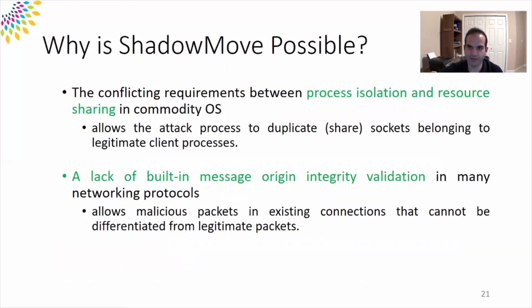Now let's talk briefly about why ShadowMove is possible. The first problem is a conflict between process isolation and resource sharing requirements on commodity operating systems. On one hand, the OS is required to provide resource sharing; on the other hand, it must protect these resources from user processes. The second problem is the lack of proper message integrity validation in many standard protocols, allowing attackers to inject arbitrary requests into an established connection without being noticed.